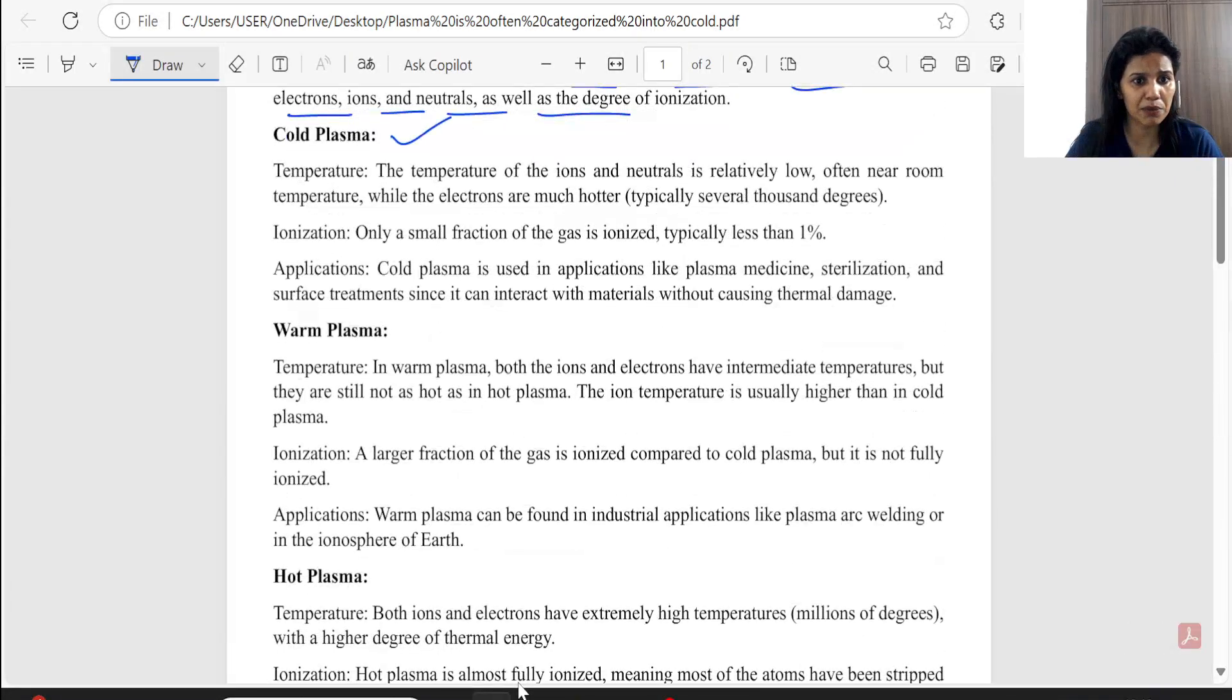First of all, we will go back to the cold plasma exam, so you will tell three things: temperature, ionization and application. Temperature of the ion and neutral atoms, ions and neutral atoms, temperature is less than the room temperature, whereas electron temperature is more than the electron, typically several thousand degrees.